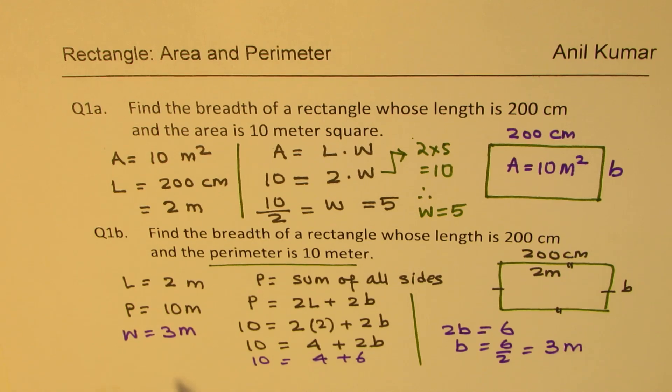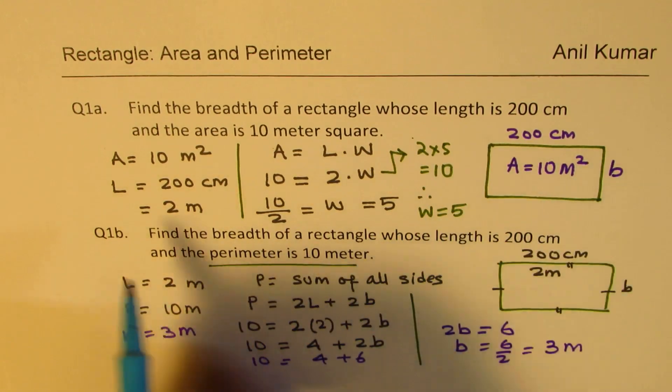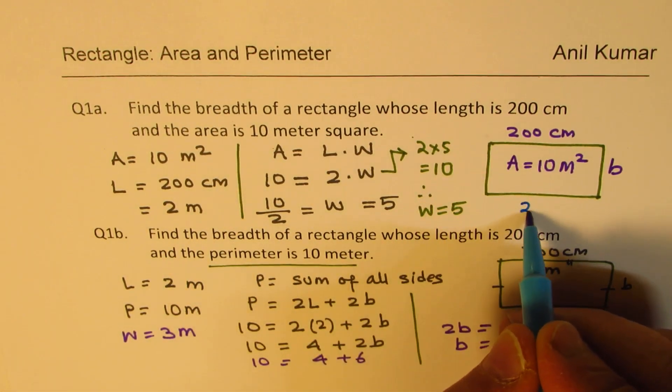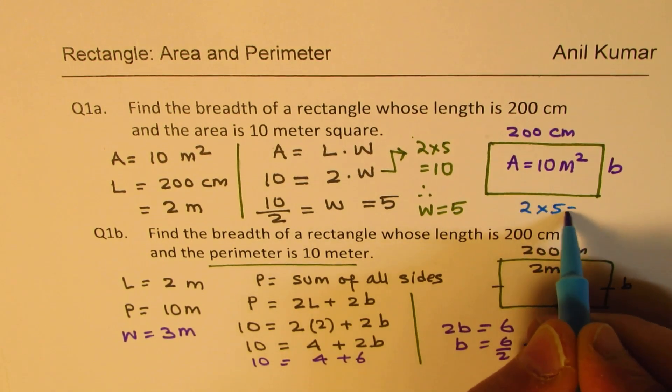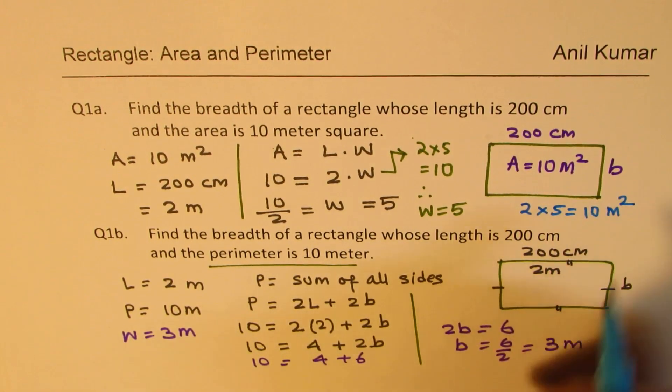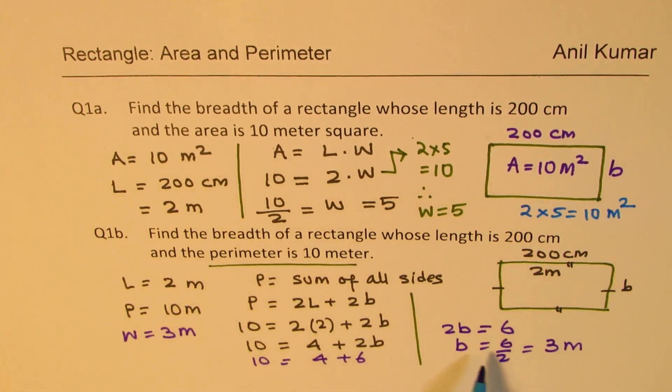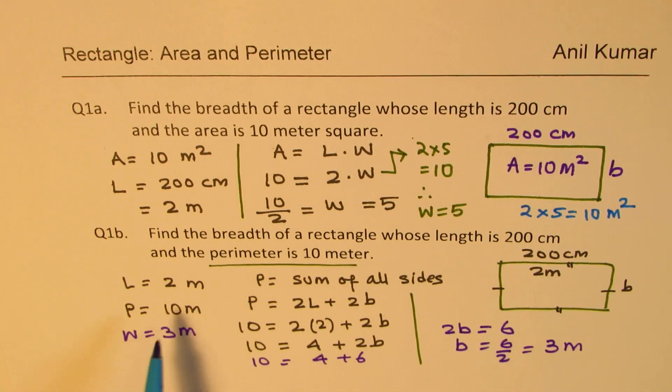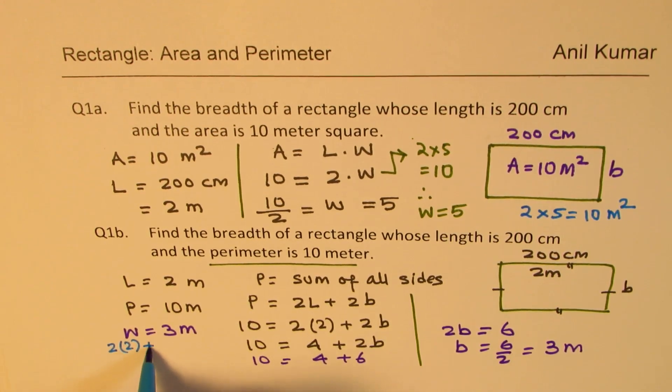Now it's always a good idea to check your result. I'd like you to pause the video here and check your result. Let us check the result for the first one. In the first one we have length of 2, so we have 2 times 5, which is 10 meters squared. In the second case, we have length of 2 and width of 3. If we do 2 times 2 plus 2 times 3, what do we get? 4 plus 6, which is also 10 meters. That becomes the perimeter.